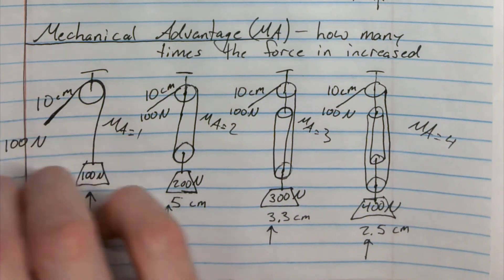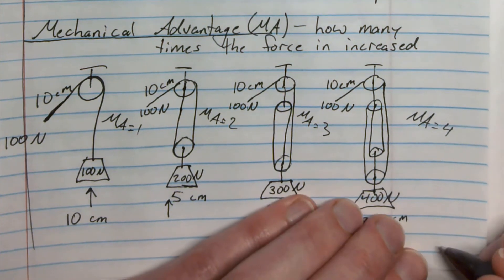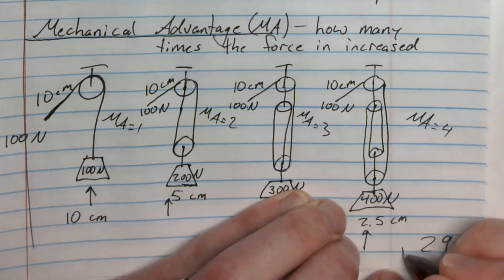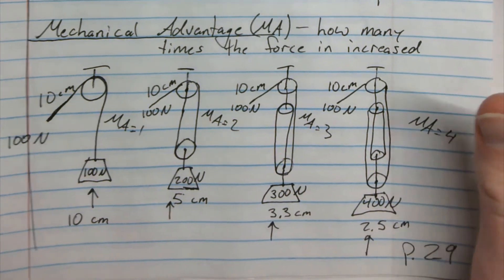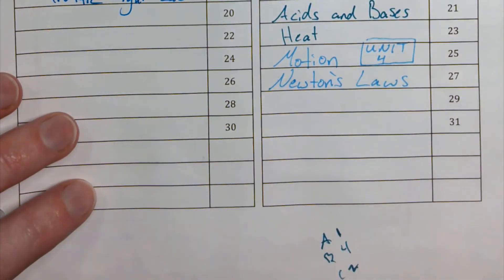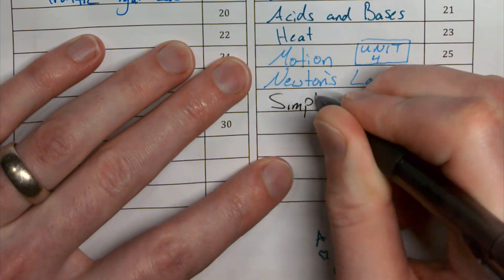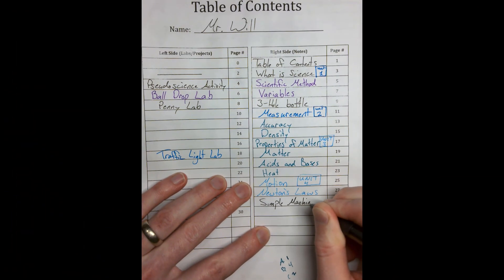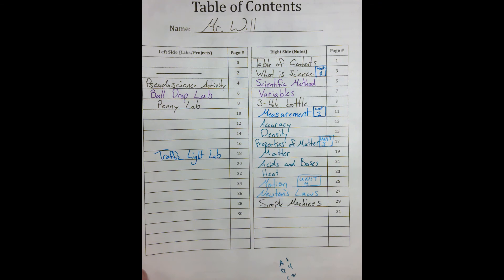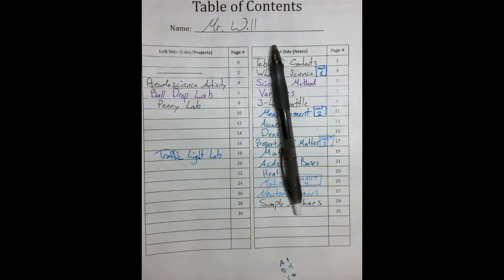Anyway, this is Simple Machines, a brief look at it. We're going to dig into that a little bit more when we do some of our projects. This is it for page 29, and then we could actually flip to the beginning to our table of contents, and we're going to put for page 29, Simple Machines. There you go, good luck!